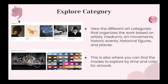You can also view the different art categories, which organize the work based on artists, mediums, movements, historic events, historical figures, and places. So if you want to look at artists specifically, you can go to that category. This is also where you can find the modes to explore by time and color for the artworks.